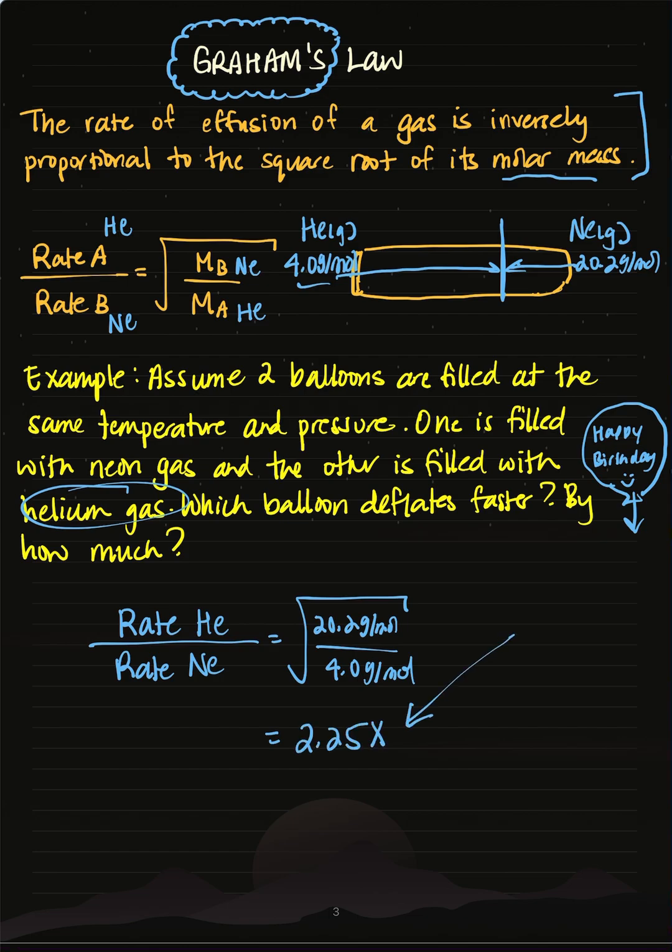So what this means is helium is going to diffuse out of the balloon faster by 2.25 times. This is going to move faster because it's much lighter of a gas compared to neon. That's how we apply Graham's Law. Let me know if you have any questions and thank you for tuning in.